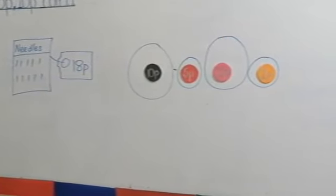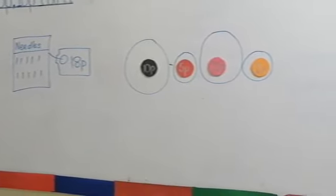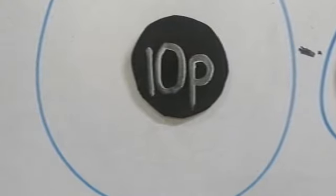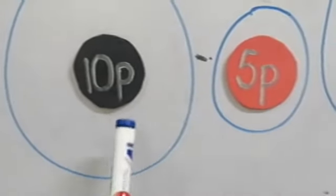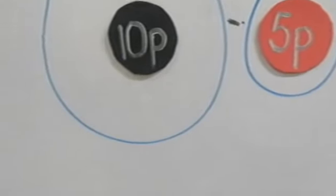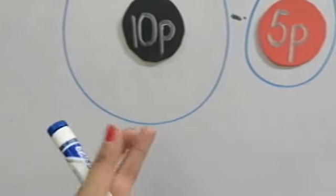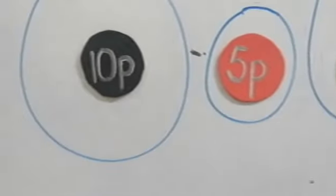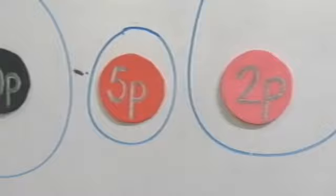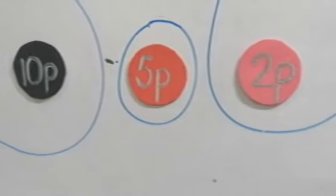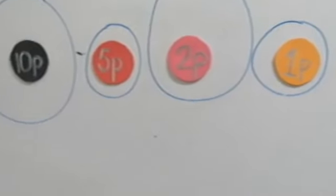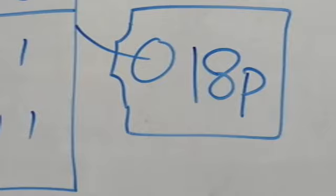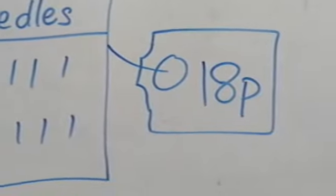So this is how we can purchase this pack of needles. The cost of needles is 18 paisas. First of all, we added 10 paisas. Then we added 5 paisas — 10 plus 5: count karein, 11, 12, 13, 14, 15. Then we added 2 paisas into 15 — count karein: 16, 17. Phir humne usme 1 paisa add kiya — 17 ke aage 1 tak count karein: 18. So the total price is 18.